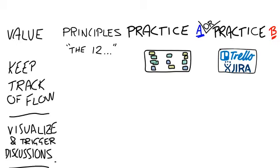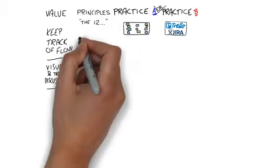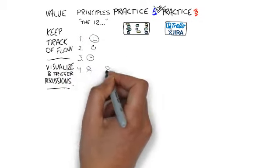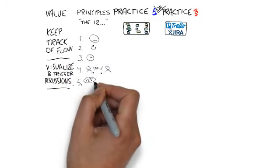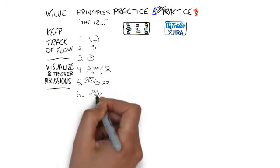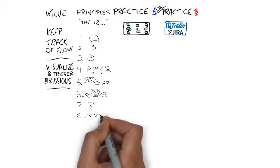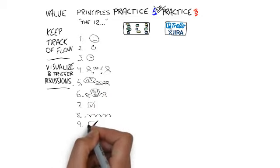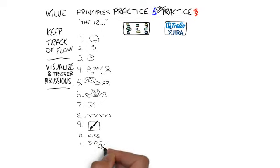As it turns out, we can lean on, pun intended, a set of agile principles here. Satisfy the customer, welcome change, deliver frequently, work together with business daily, motivated individuals, face-to-face conversation, working stuff matters, constant pace, taking good design, simplicity, self-organizing teams, reflect and adjust.